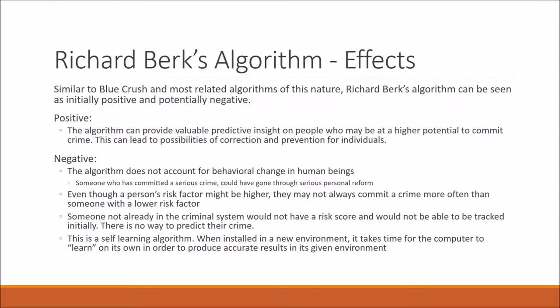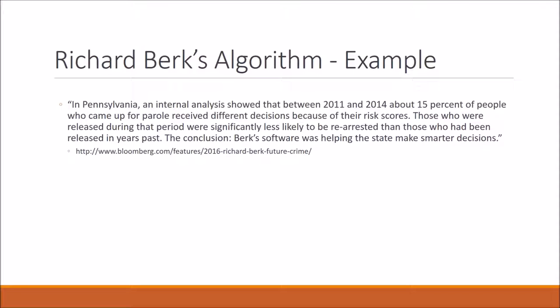The effects of Richard Burke's algorithm, similar to Blue Crush, can initially be seen as positive followed by negative. The positive side is that the algorithm can provide valuable predictive insight to law enforcement and other people making decisions on criminals. The negative is that the algorithm does not account for things such as behavioral changes in human beings, and even though a person's risk factor might be higher, they might not always commit crime more often than someone with a lower factor. An example is in Pennsylvania, where internal analysis showed that between 2011 and 2014, about 15% of people who came up for parole received different decisions because of their risk scores, and those who were released during that period were significantly less likely to be re-arrested than those released in past years.